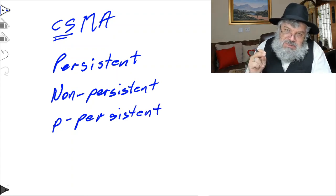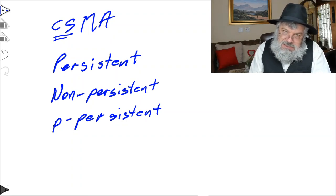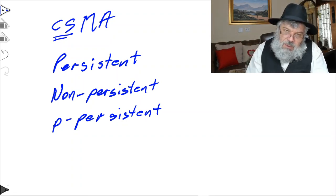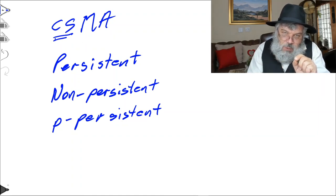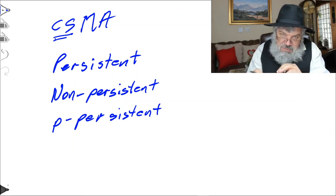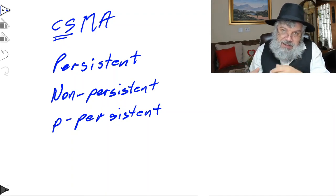P-persistent is where P is some probability — let's say 50%. When I arrive at the medium and it's busy, I wait and persist. When the medium becomes empty, I flip a coin. If I get heads, I proceed and start transmitting. If not, I go away for a random period and come back to try again.